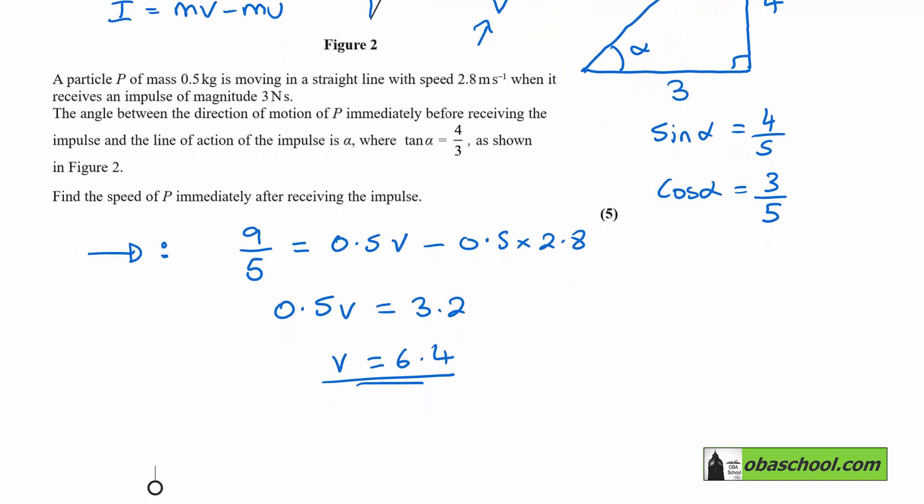And then we can look at the vertical. Once again using I is MV minus MU. The impulse as we just worked out was 12/5, and in this direction there is only a final velocity, which we called W in the diagram above. It was traveling horizontally to begin with, so there's no initial in this direction. So that would give us that W is equal to 24/5, which is 4.8.